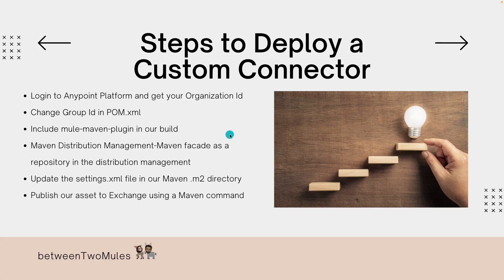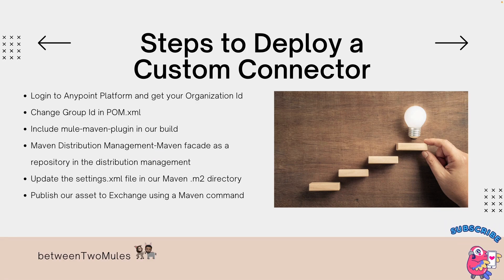These are the steps we need to implement to deploy a custom connector on AnyPoint Exchange. First, log into AnyPoint Platform to get your organization ID. Then change your group ID to that organization ID in pom.xml. After that, include the Mule Maven plugin in the build tag in pom.xml, followed by adding a distribution management — also known as Maven Facade — as a repository. Then update the settings.xml file in your Maven .m2 repository, and finally publish the asset to Exchange using a Maven command.